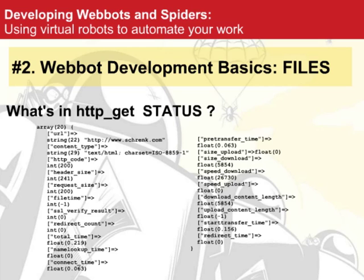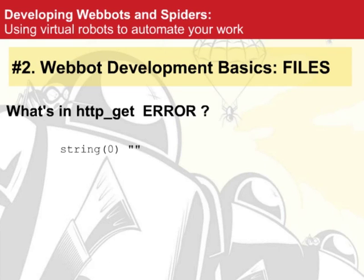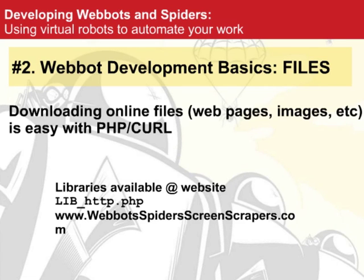The error field hopefully returns nothing — I don't rely on it very much. It returns error codes but I think it's much more important to rely on the HTTP code; the error code is more something you'd use for debugging. Downloading web pages, images, and other online files is easy with PHP cURL. The library is available at the website and I highly encourage you to download and examine it.